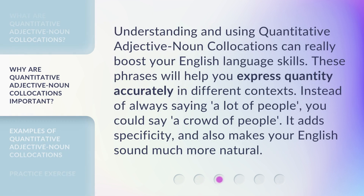Understanding and using quantitative adjective noun collocations can really boost your English language skills. These phrases will help you express quantity accurately in different contexts. Instead of always saying 'a lot of people,' you could say 'a crowd of people.' It adds specificity and also makes your English sound much more natural.